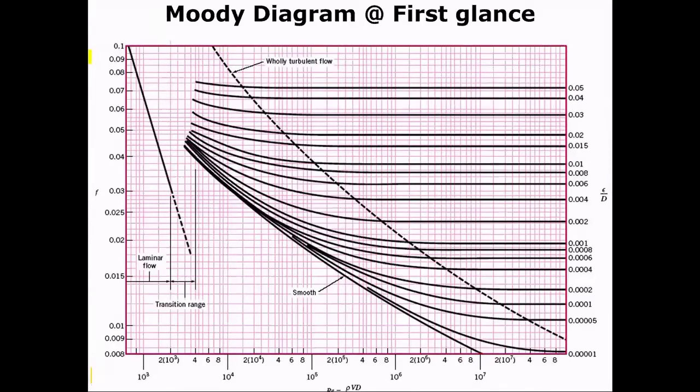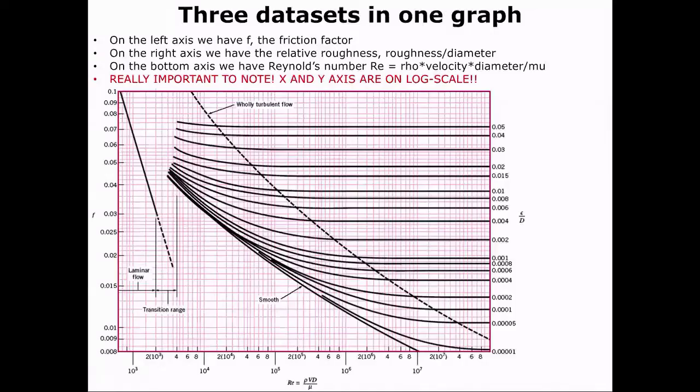So this is the Moody diagram at first glance. You'll notice a few things about the diagram. On the left axis, we have f, our friction factor. On the right axis, we have relative roughness, which is our epsilon over diameter, where epsilon is a roughness term that is a function of pipe properties.